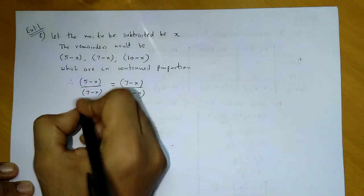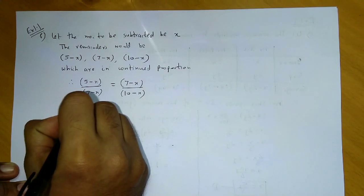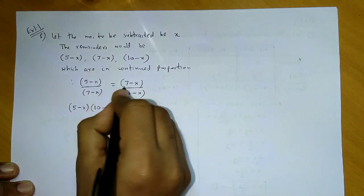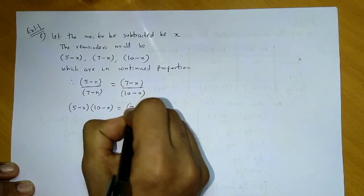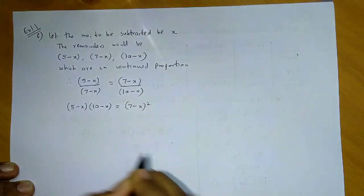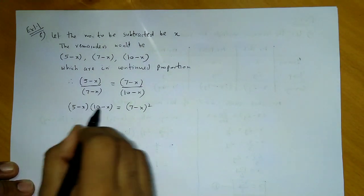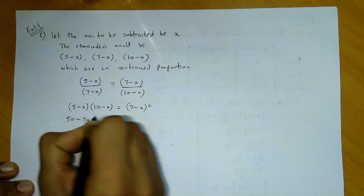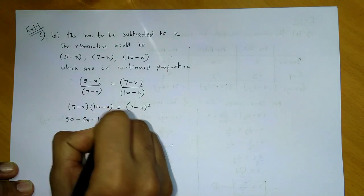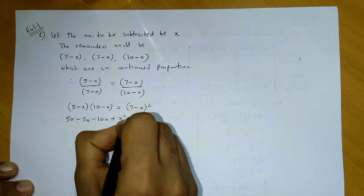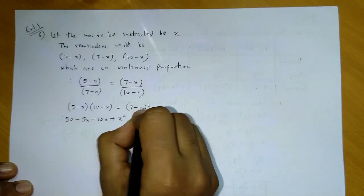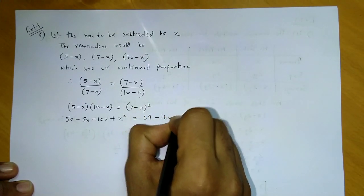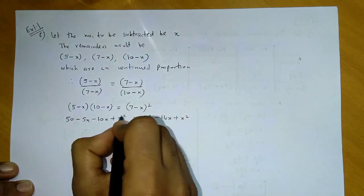Now let us cross multiply. We get (5 minus x) times (10 minus x) equals (7 minus x) whole squared. Opening the brackets: 50 minus 5x minus 10x plus x squared. Using the expansion (A minus B) squared, we get 49 minus 14x plus x squared.